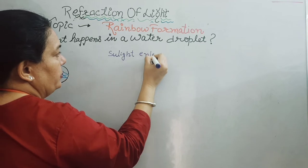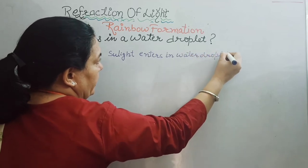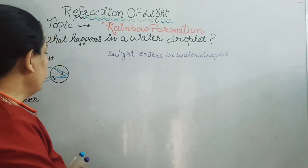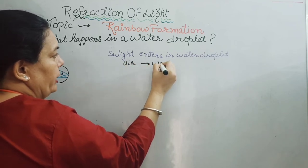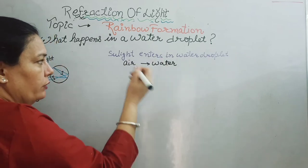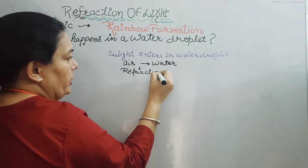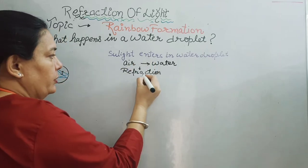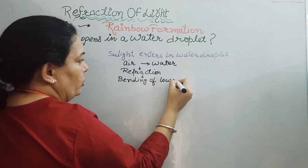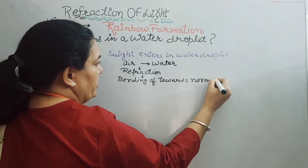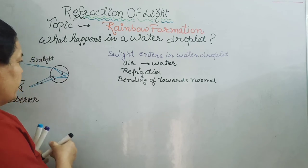Sunlight enters the water droplet — it enters from air into water. So refraction of light takes place, going from rare medium to denser medium, meaning bending of light towards normal. And it splits into seven colors. When it enters the water droplet, it splits into seven colors — red at the top and violet at the bottom.